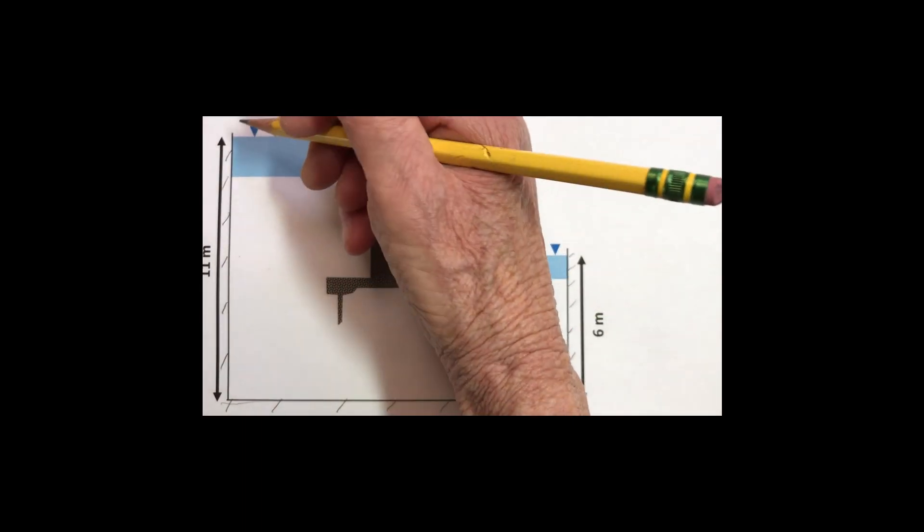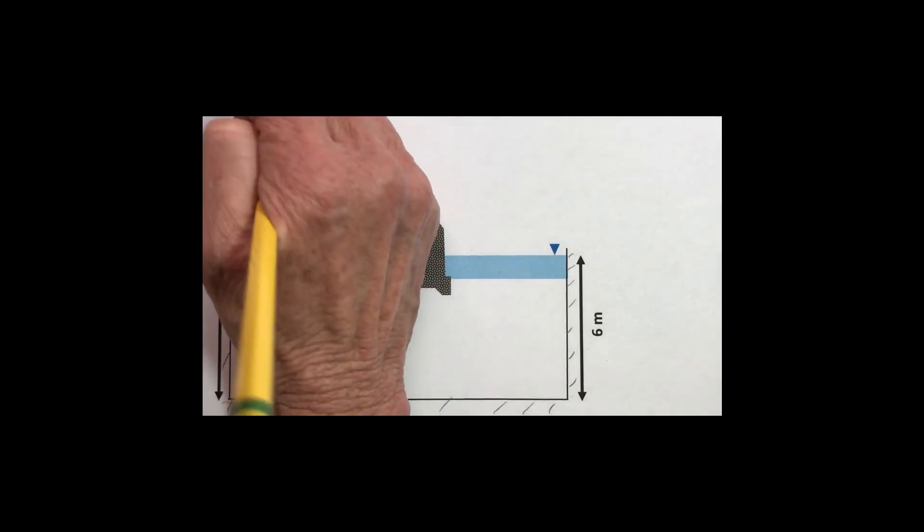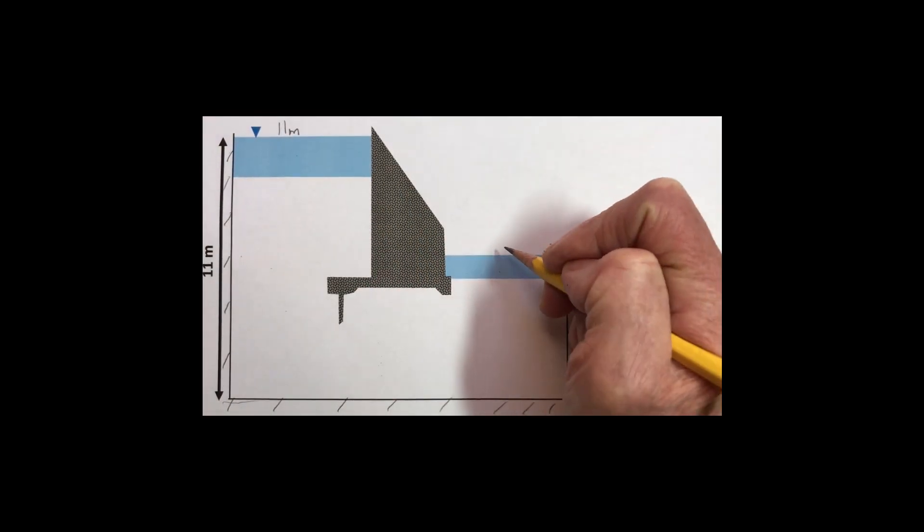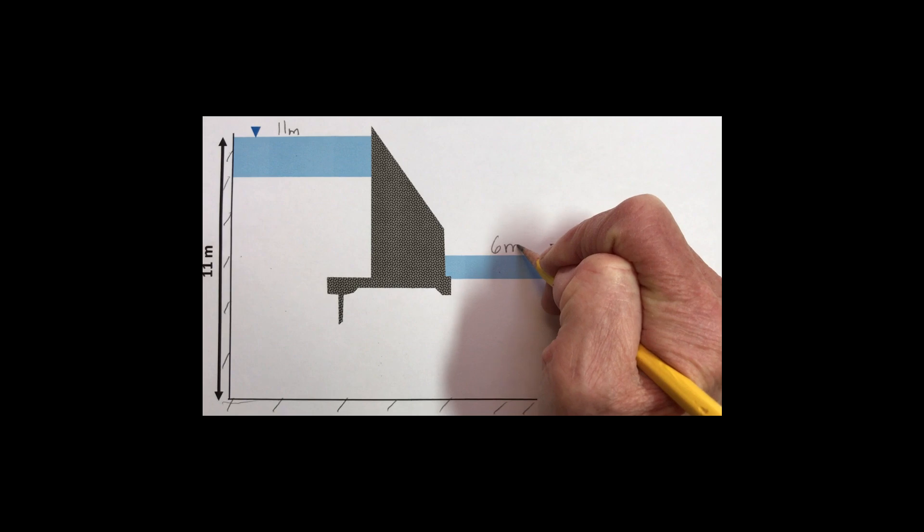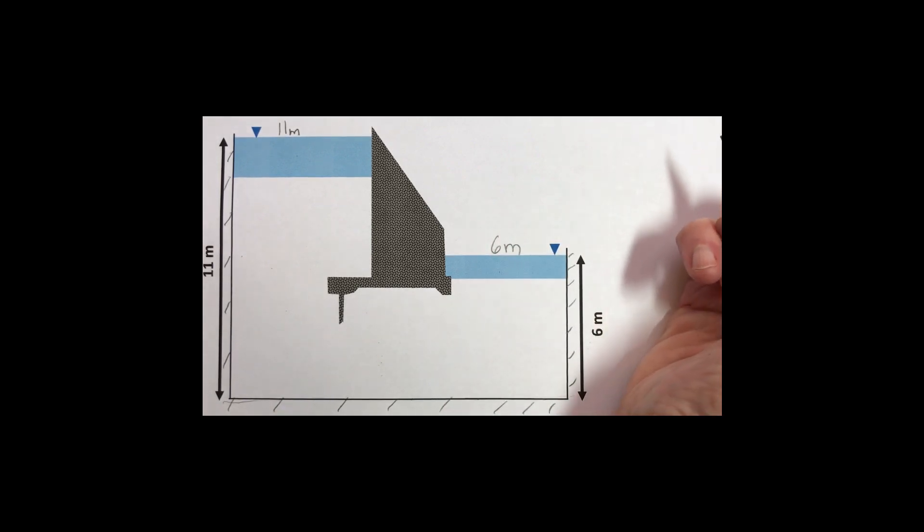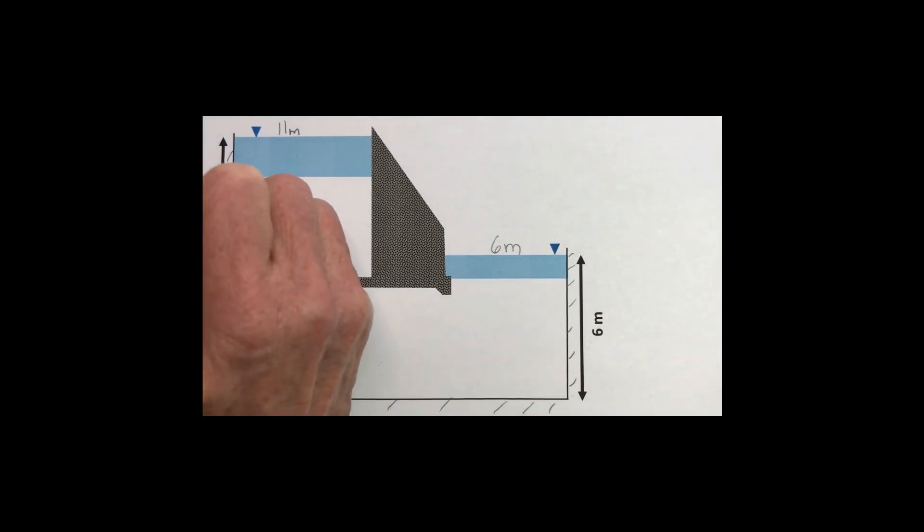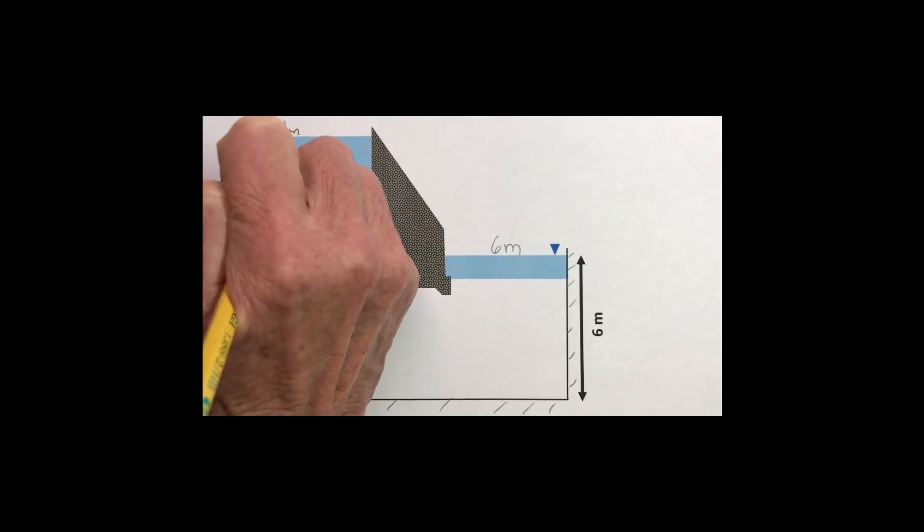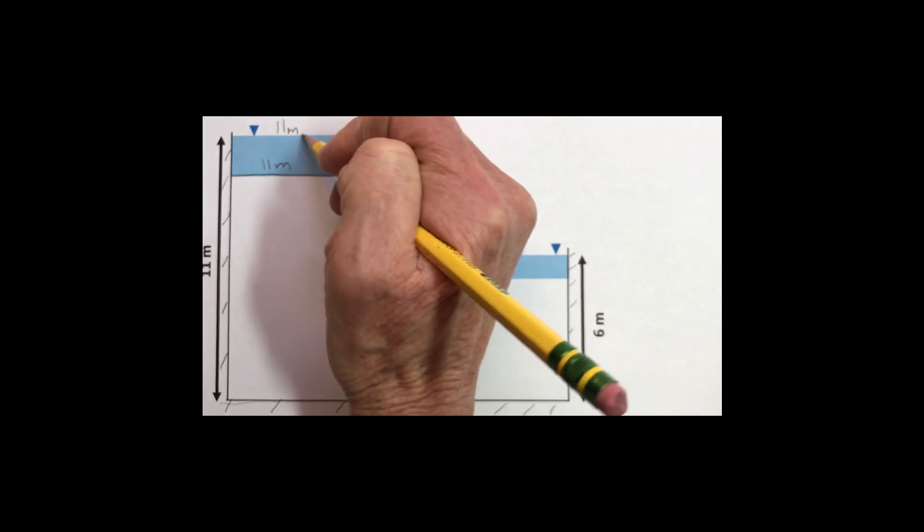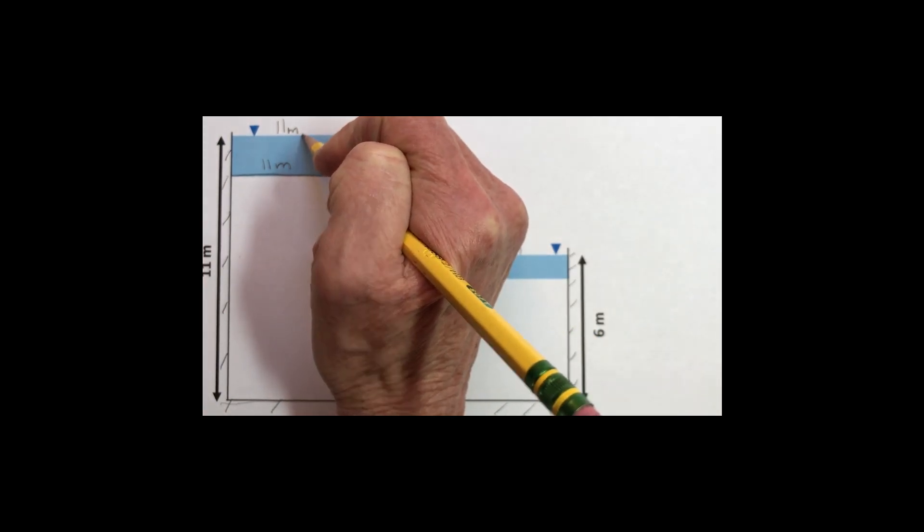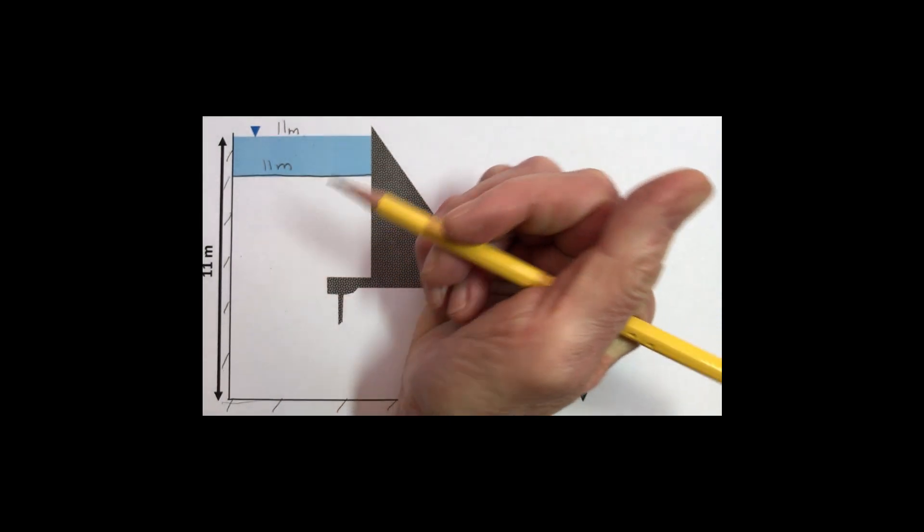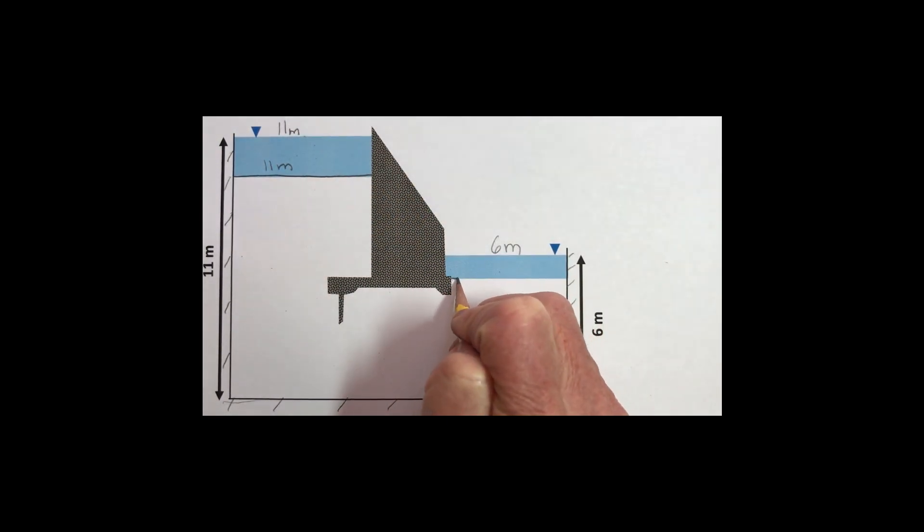This reservoir on the upgradient side is at 11 meters elevation and the one at the down gradient side is 6 meters elevation. We can define the boundary at the base of the reservoir as being an 11 meter equipotential line. If the surface of a water body is at 11 meters then the head at any depth in the water body is also 11 meters, and so the equipotential line on this side is 6 meters.